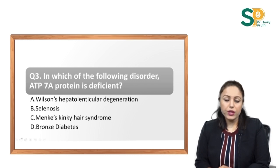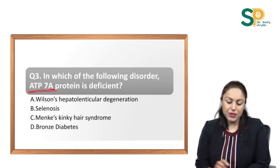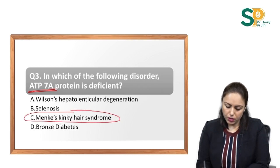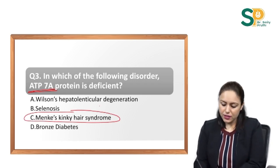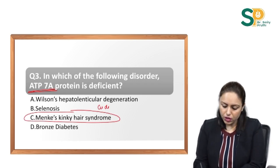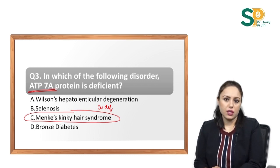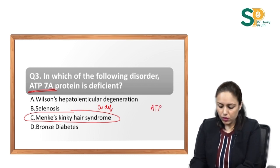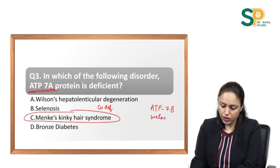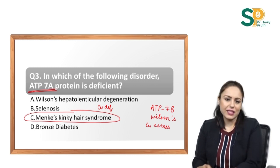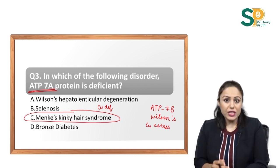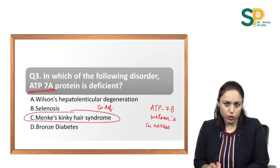Question number 3: in which disorder is ATP7A protein deficient? ATP7A protein is deficient in Menkes disease, where there is copper deficiency in the body. Also learn that ATP7B protein is deficient in Wilson's disease, which is a condition of copper excess in the body. Read both topics from your books or my videos.